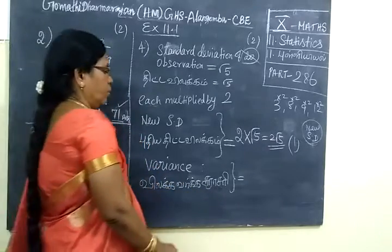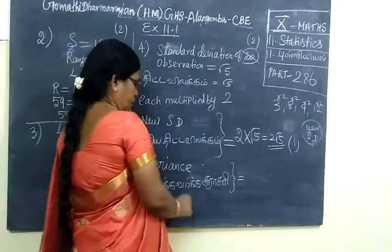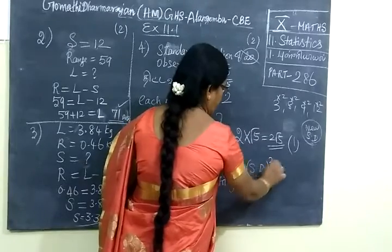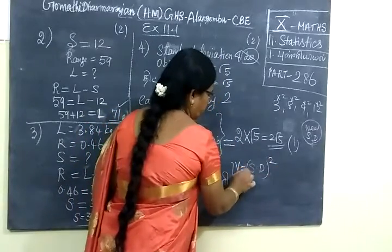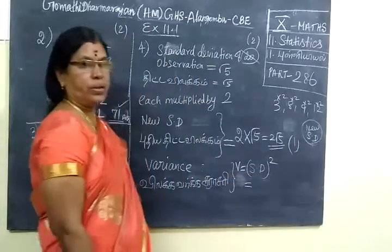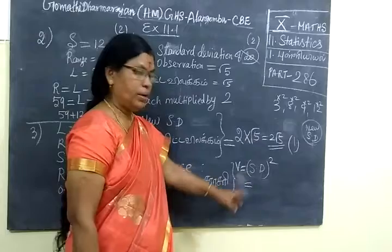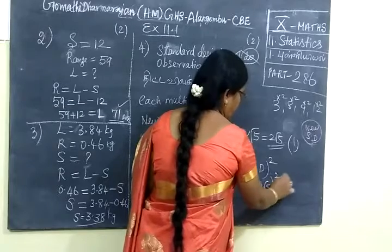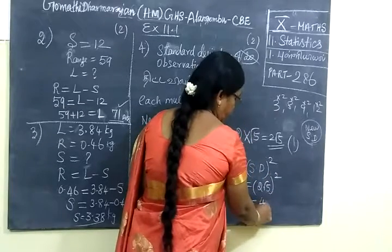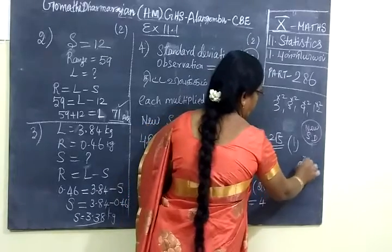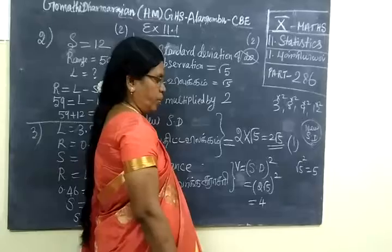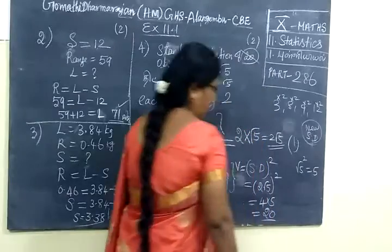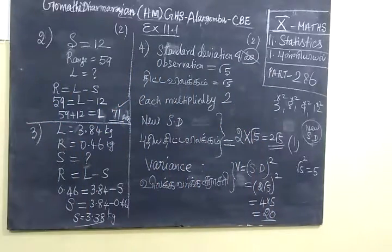The standard deviation is 2 root 5. The variance is the square of standard deviation. So variance equals (2 root 5) squared. 2 squared is 4, root 5 squared is 5. Because root 5 into root 5 is 5. So 4 into 5 equals 20. The answer is variance equals 20.